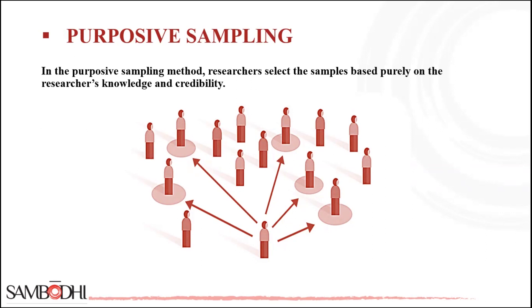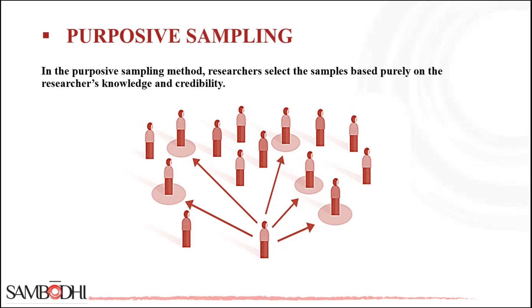You might wonder: what is the difference between convenience and purposive sampling? They are often used interchangeably but are two different methods. In convenience sampling, researchers recruit participants based solely on convenience and accessibility, leveraging individuals that can be accessed with minimum effort. In purposive sampling, researchers use judgment to select a sample of individuals that will benefit their study, requiring prior knowledge about the purpose of the study so they can choose participants that fit certain characteristics and represent the greater population of interest.